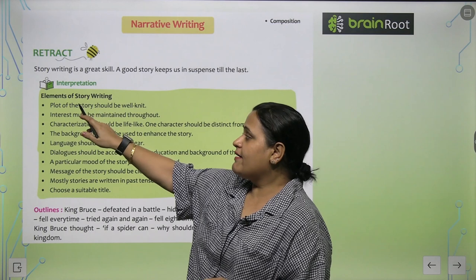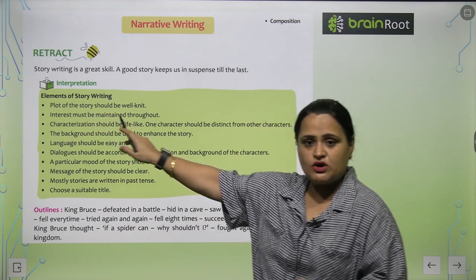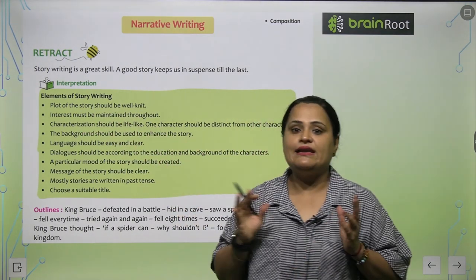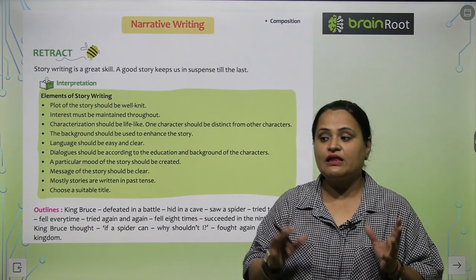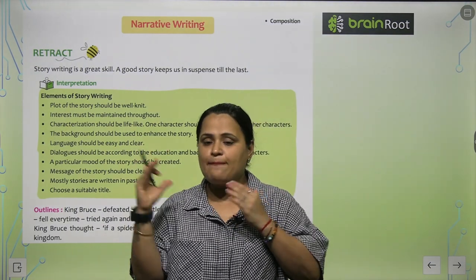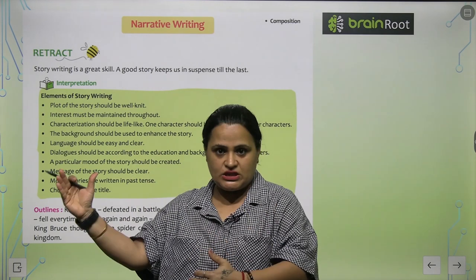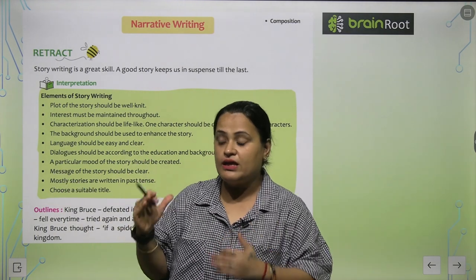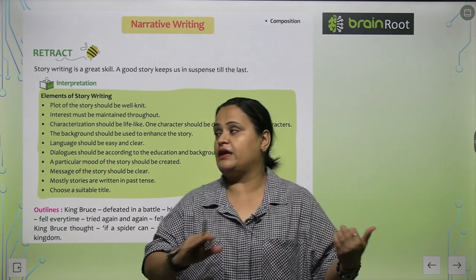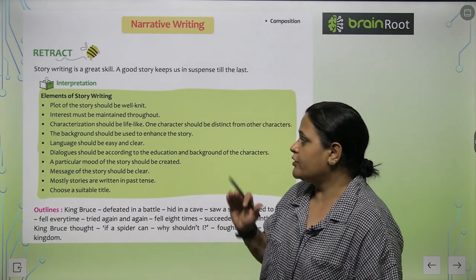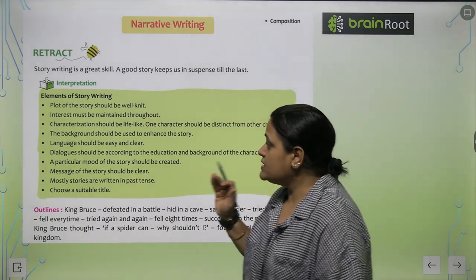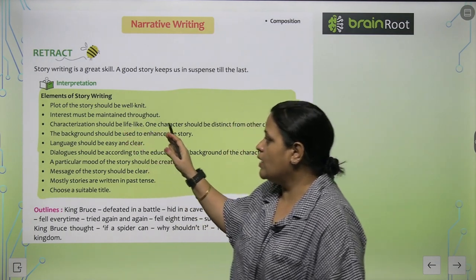Here are some elements of story writing. The plot of the story should be well-knit — well-knit means it should be prepared step by step. So the plot should progress in a structured, step-by-step manner. Interest must be maintained throughout the story.